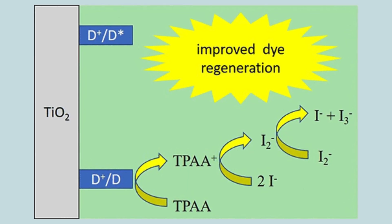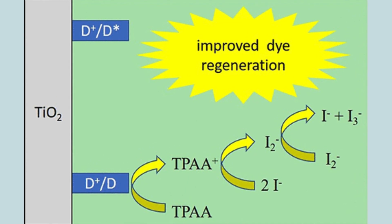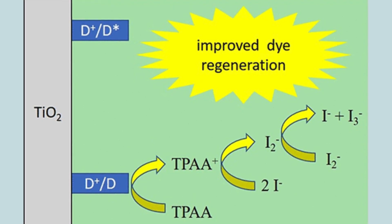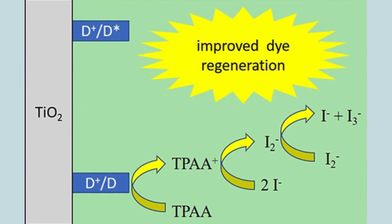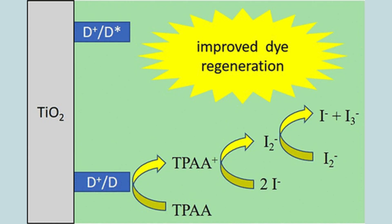After injecting an electron, the dye becomes oxidized. To continue the process, it receives an electron back from the iodide ions in the electrolyte solution, regenerating the dye in its original state.